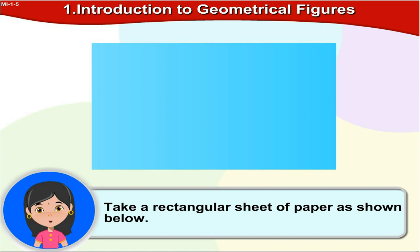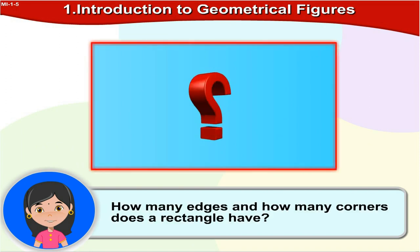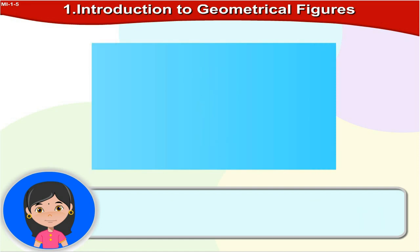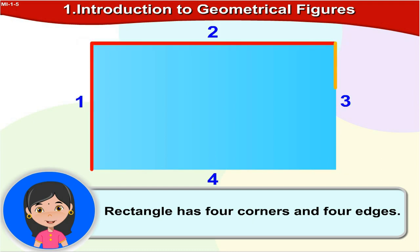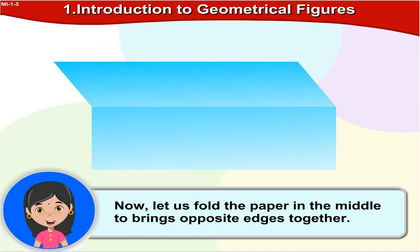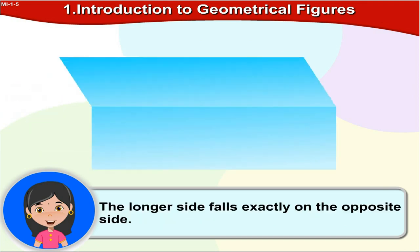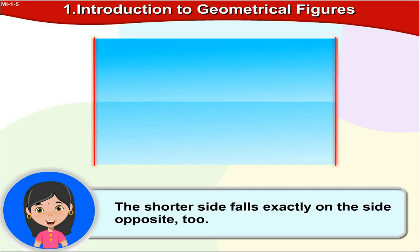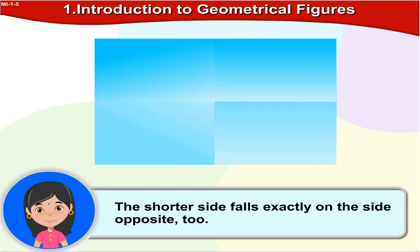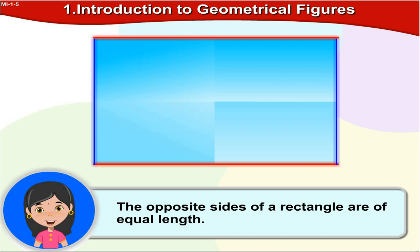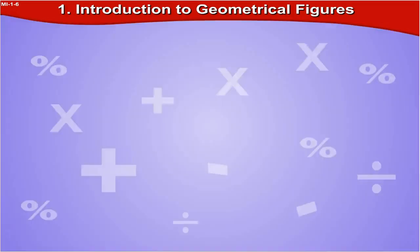Take a rectangular sheet of paper as shown below. How many edges and how many corners does a rectangle have? If you notice properly, a rectangle has four corners. Now let us fold the paper in the middle to bring the opposite edges together. The longer side falls exactly on the opposite side. The shorter side falls exactly on the opposite side too. So the opposite sides of a rectangle are of equal length.